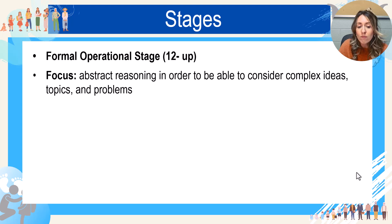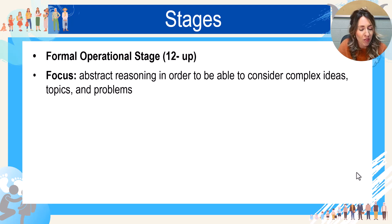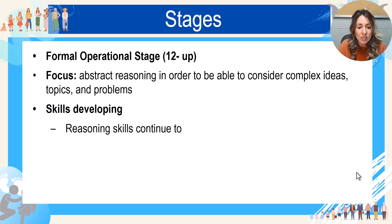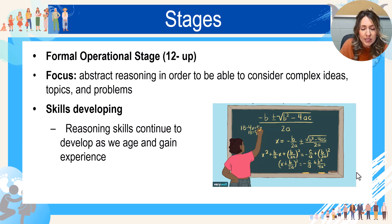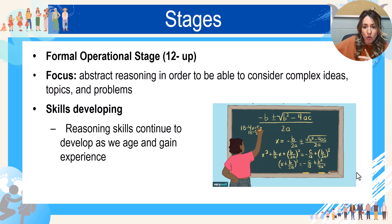The last stage is formal operational, and this stage is all about abstract reasoning, starting from age 12 and up. It's not to say that at 12 you are as sophisticated a thinker as you are at 20, but abstract reasoning starts to develop at this time. The skills being worked on include continuing to develop higher-order reasoning — like algebra, physics, or English — where things get harder and harder with more complexity, more things to think about, and more variables to consider as you continue to grow.